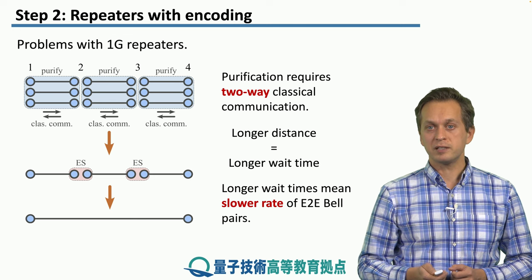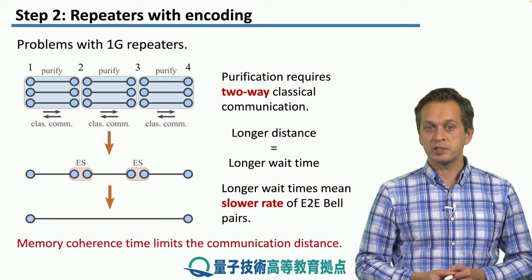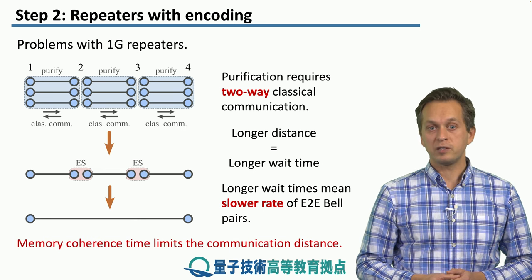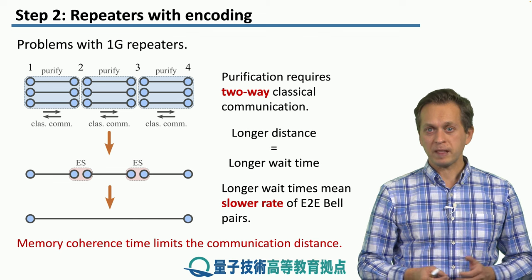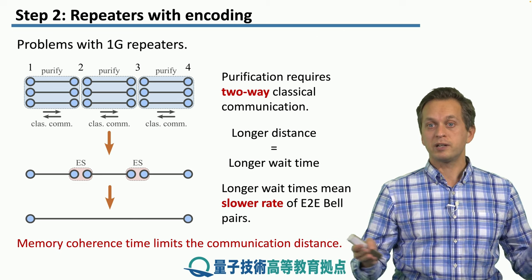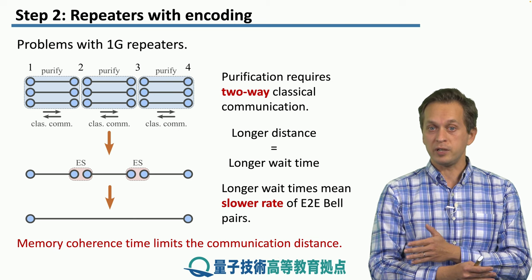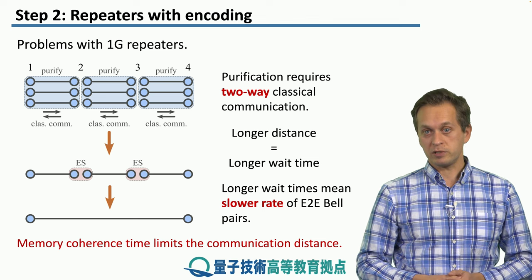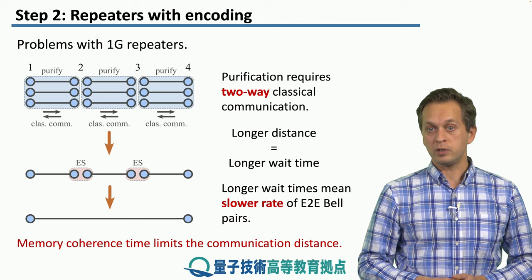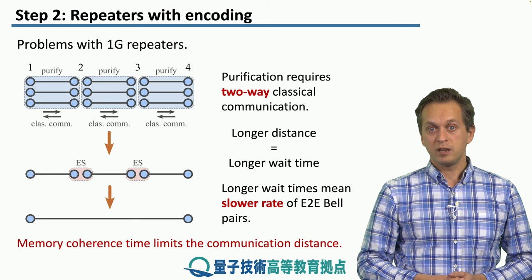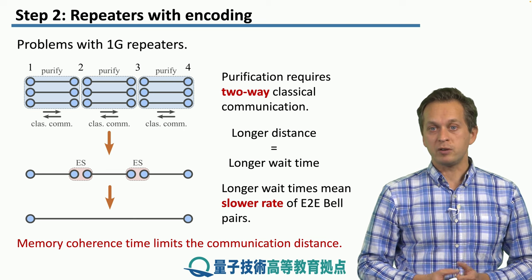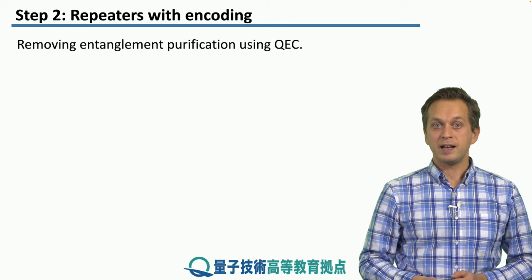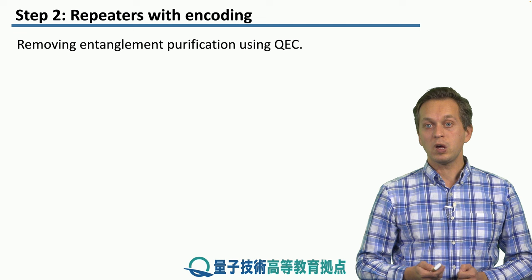Furthermore, if the distance gets too long, we have serious issues with memory decoherence, because memory has finite coherence times. The nodes have to wait for classical information to be exchanged, so the qubits are just decohering in the memories and become completely useless. Is there a way of getting rid of these waiting times and this two-way classical communication? The answer is yes — with the help of quantum error correction, we can do it.